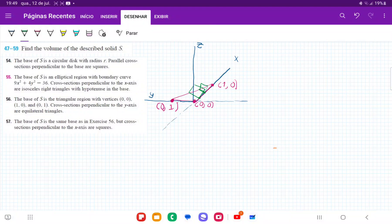For exercise 57, the base of our solid is the same as exercise 56, which has a triangle with vertices at (0,0), (1,0), and (0,1). But now we have that the cross sections perpendicular to the x-axis are squares.